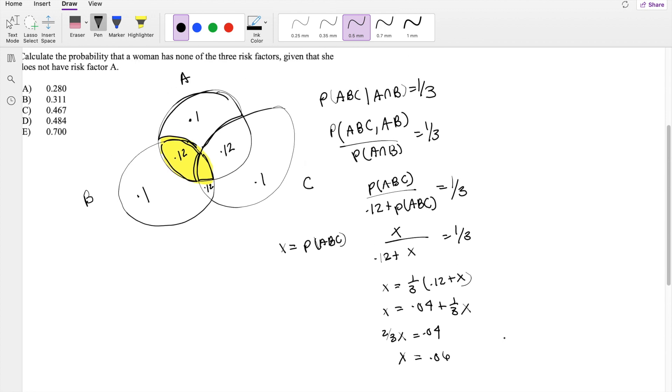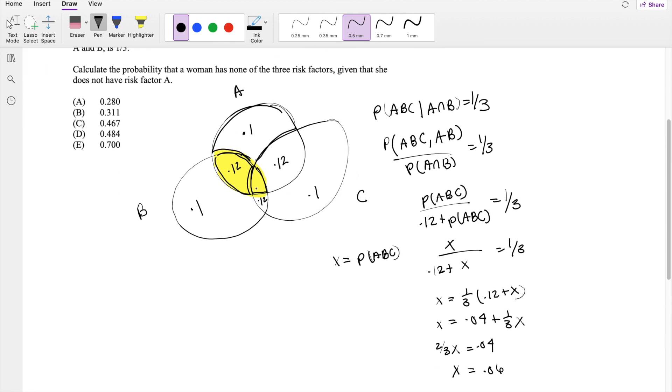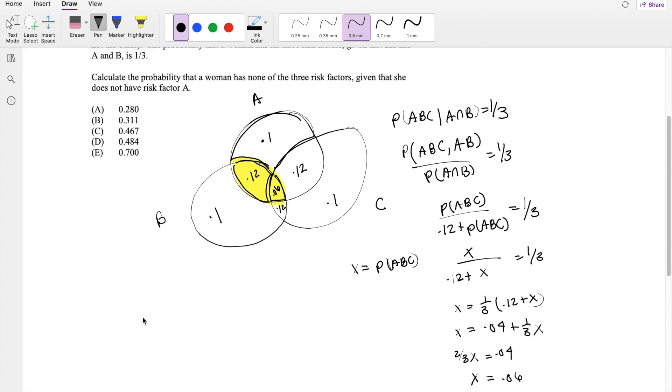So we know the intersection is 0.06 here. The question is, find the probability that a woman has none of these three factors given that she does not have risk factor A.